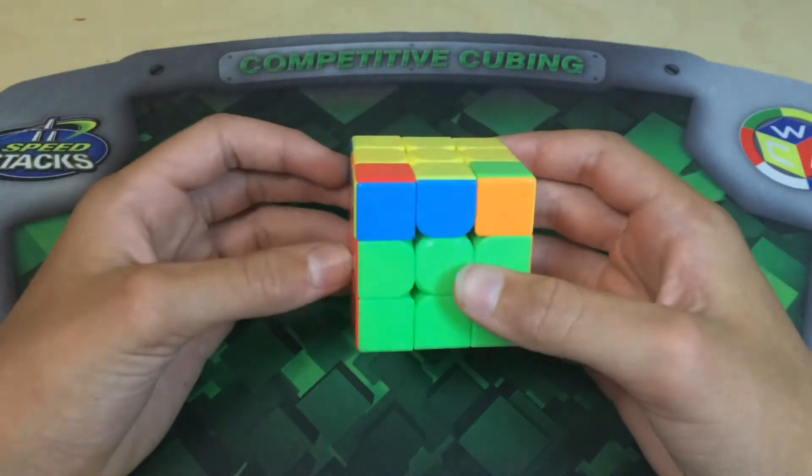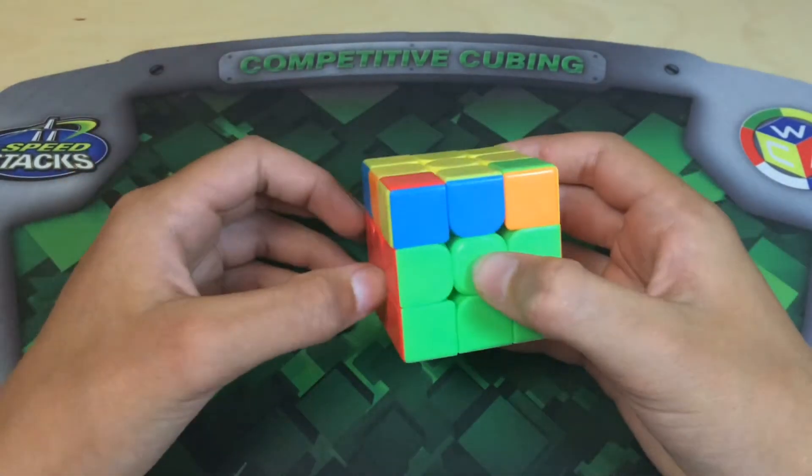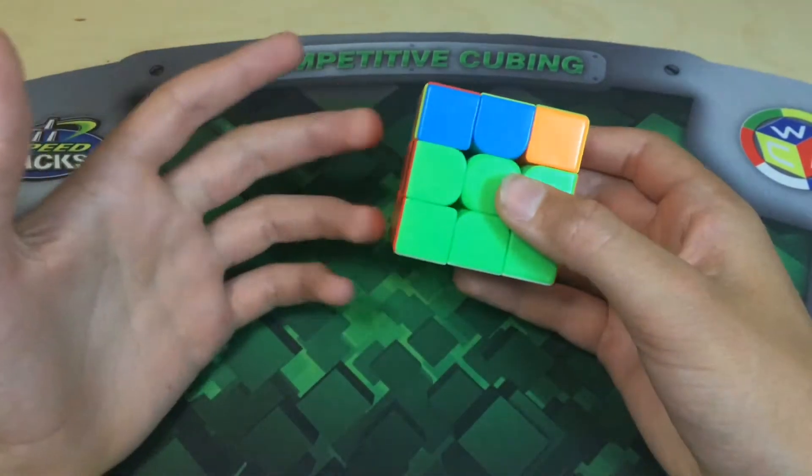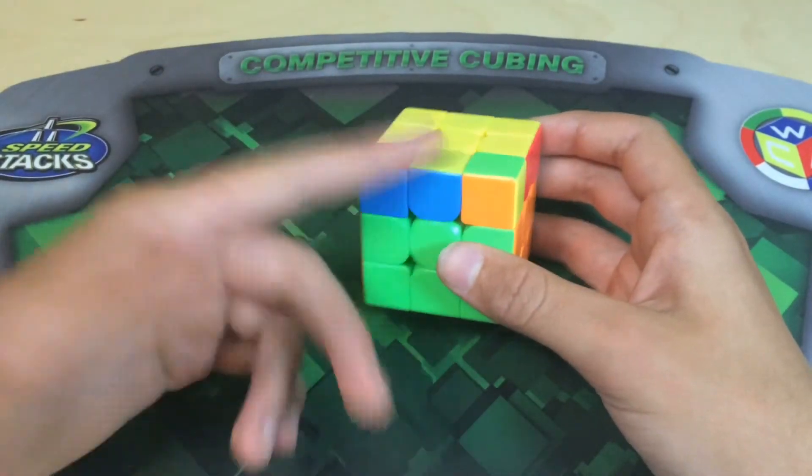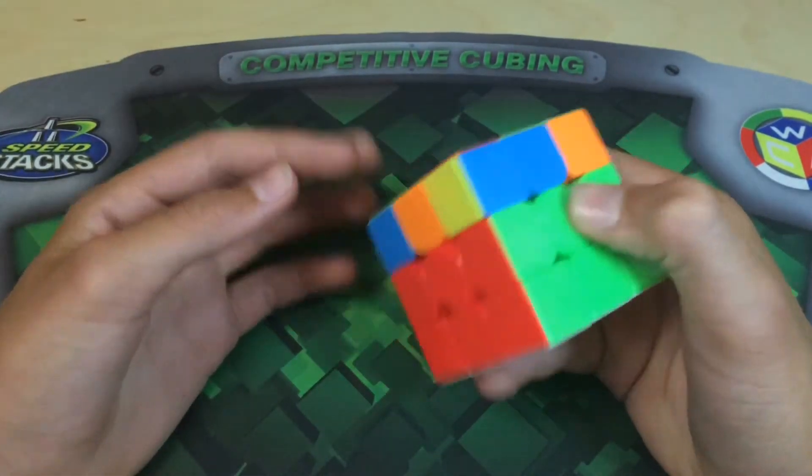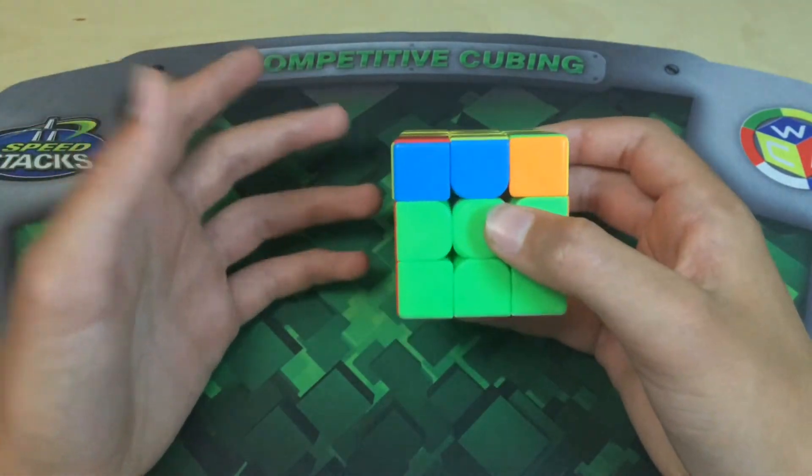Basically, you just use the principles that I showed you in the three and the two case. So you insert a bad edge and then you put the other bad edge in front and then you do a sledgehammer to orient them. And then you proceed to solve the next case.